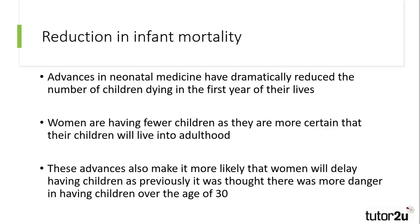Finally, the decrease in infant mortality rate has impacted on the falling birth rate. Greater advances in medical technologies, particularly in neonatal medicine, have meant that more children are surviving into adulthood than ever before. As a result, women are less likely to have additional children, as they are more certain that their children will live into adulthood. These advances have also led to women having children at older ages, as in previous generations it was believed that women faced more danger of having pregnancies over the age of 30. Having children later in life also means that women are likely to have less children than somebody who has their first child in their early twenties.